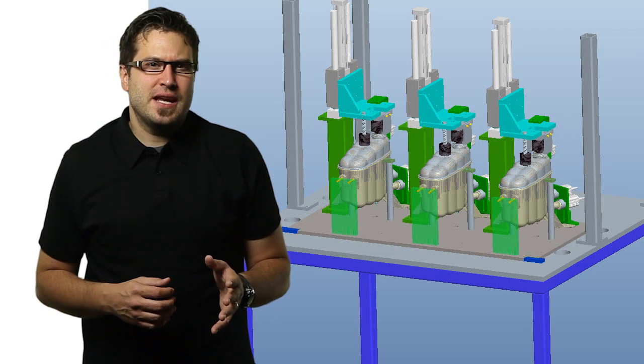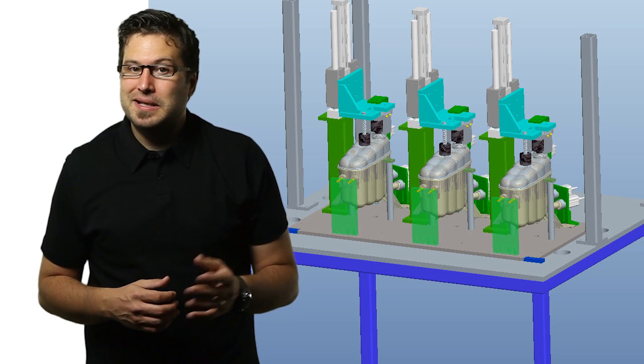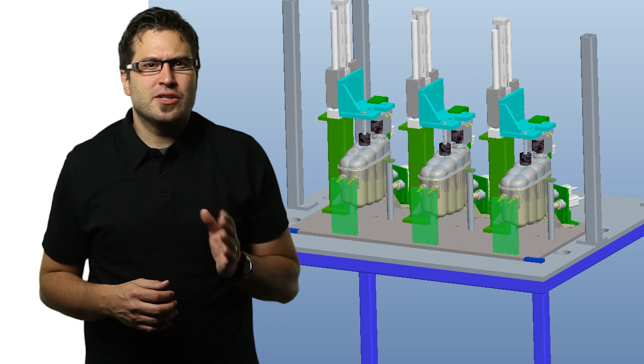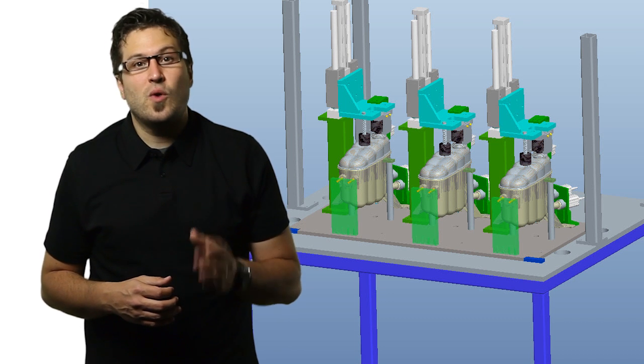Because of the complexity of each of the stations in the coolant reservoir assembly line, Josh and his team found that using skeleton models in Creo Parametric allowed them to make redesigns quickly.